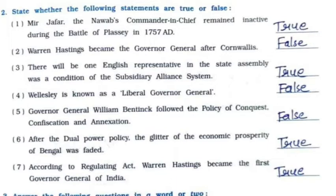Third: There will be one English representative in the state assembly — this was a condition of the Subsidiary Alliance System — it is True. Fourth: Wellesley is known as a liberal Governor General — it is False. Fifth: Governor General William Bentinck followed the policy of conquest, confiscation and annexation — it is False.